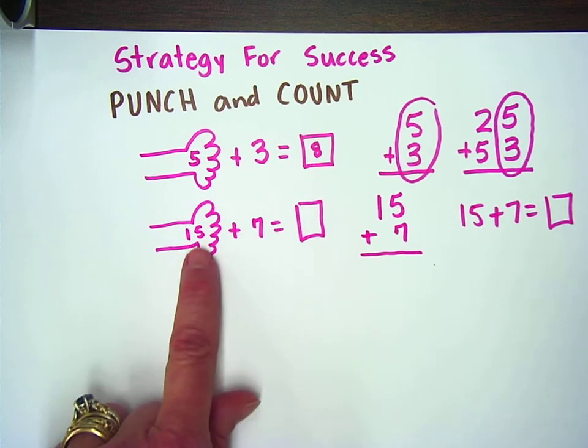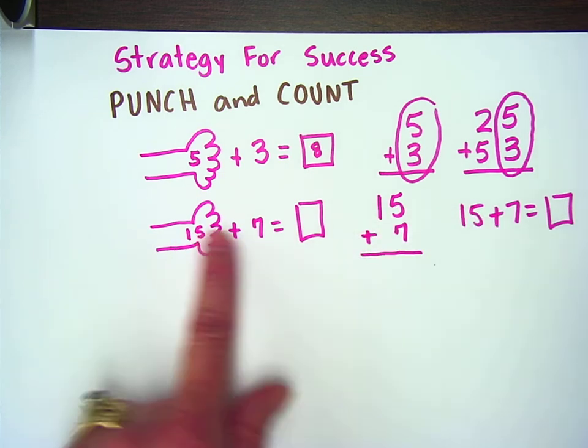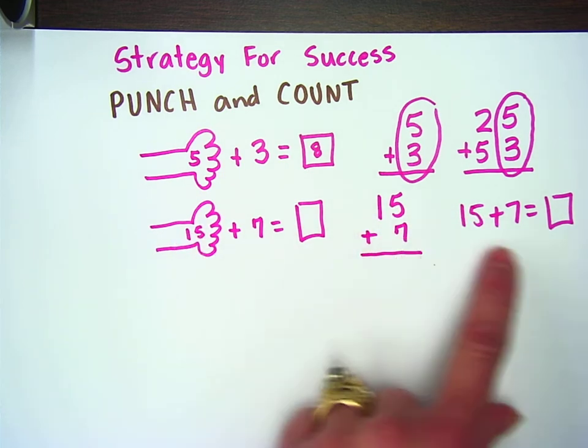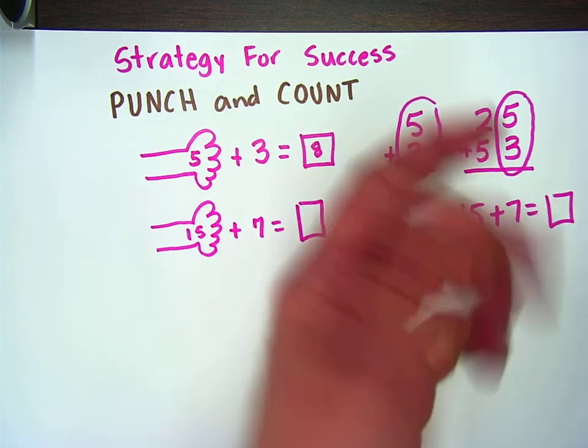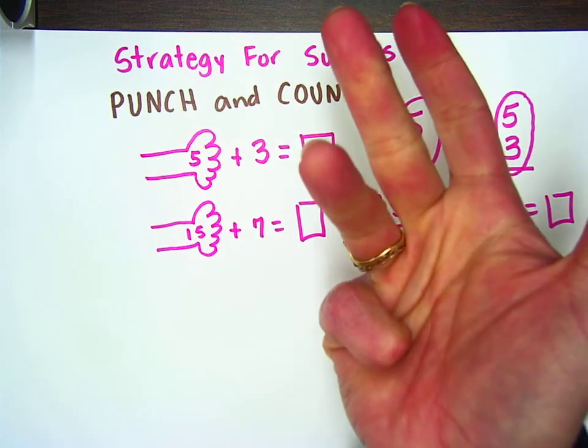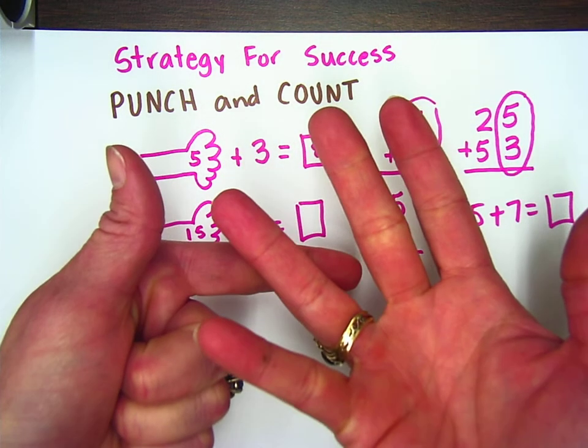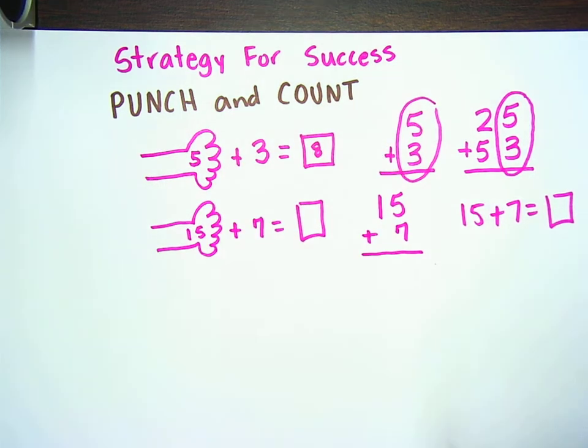So, we're going to use punch and count. Again, we're going to start with a bigger number, which is fifteen, and we're simply going to punch it, and then we're going to count seven more fingers. So, it goes like this. Fifteen, sixteen, seventeen, eighteen, nineteen, twenty, twenty-one, twenty-two. Because fifteen plus seven more fingers is twenty-two.